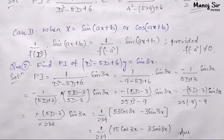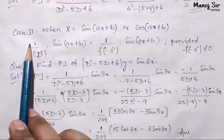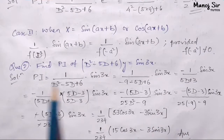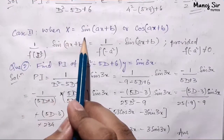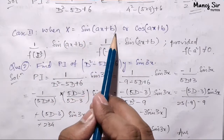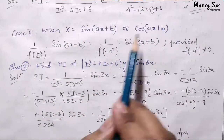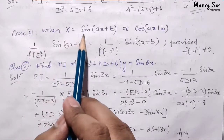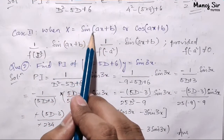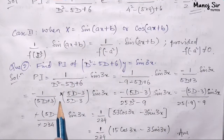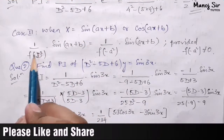Hey guys, what's up, this is Manon sir, and in this video we are going to see case number two of rules for finding the particular integral. Case number two deals with when x is equals to sine of ax plus b or cos of ax plus b — basically when it is a trigonometric function, what should be the process to find the PI.